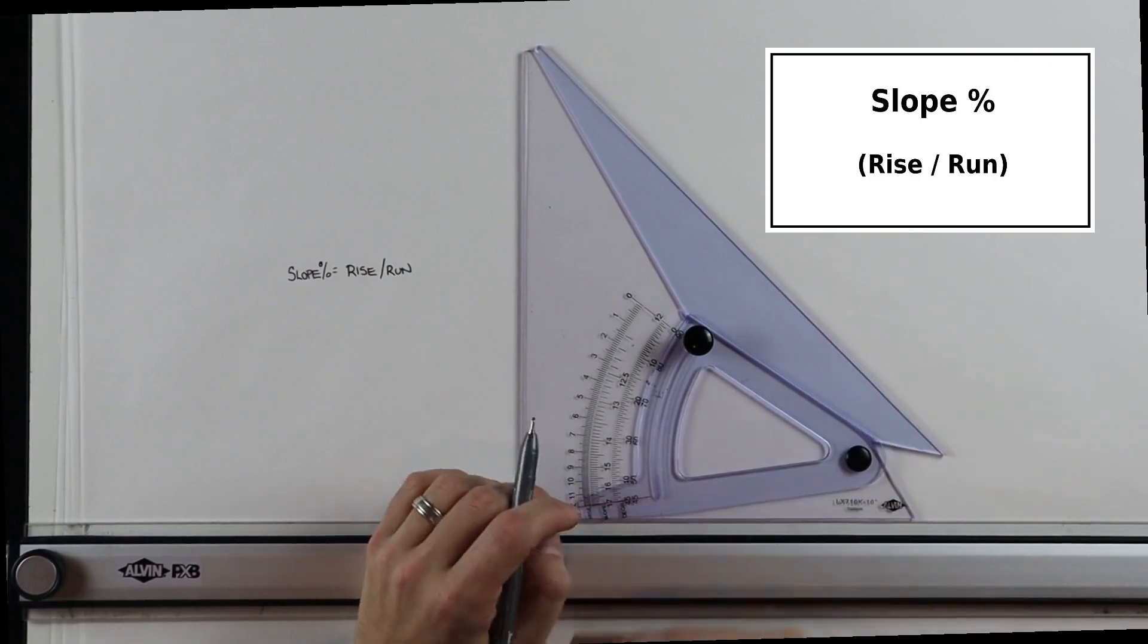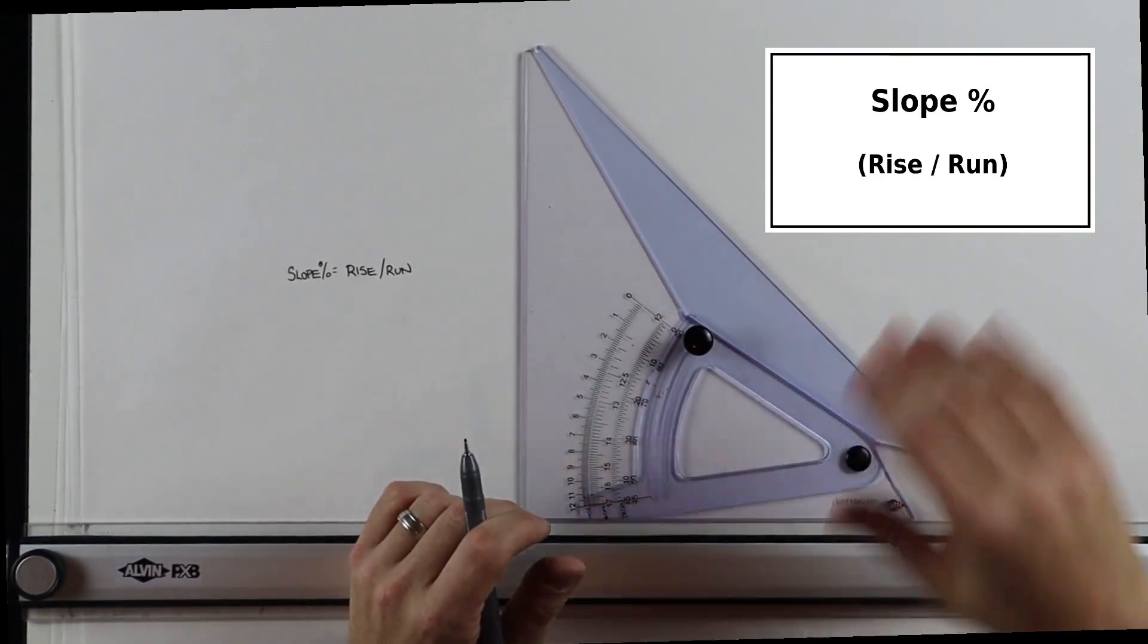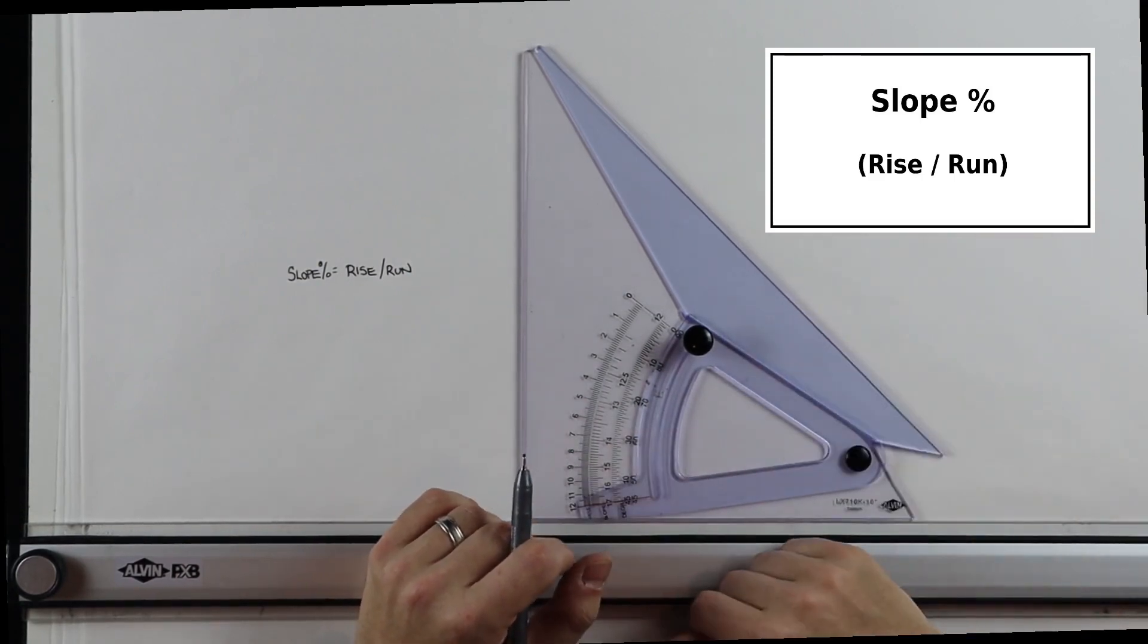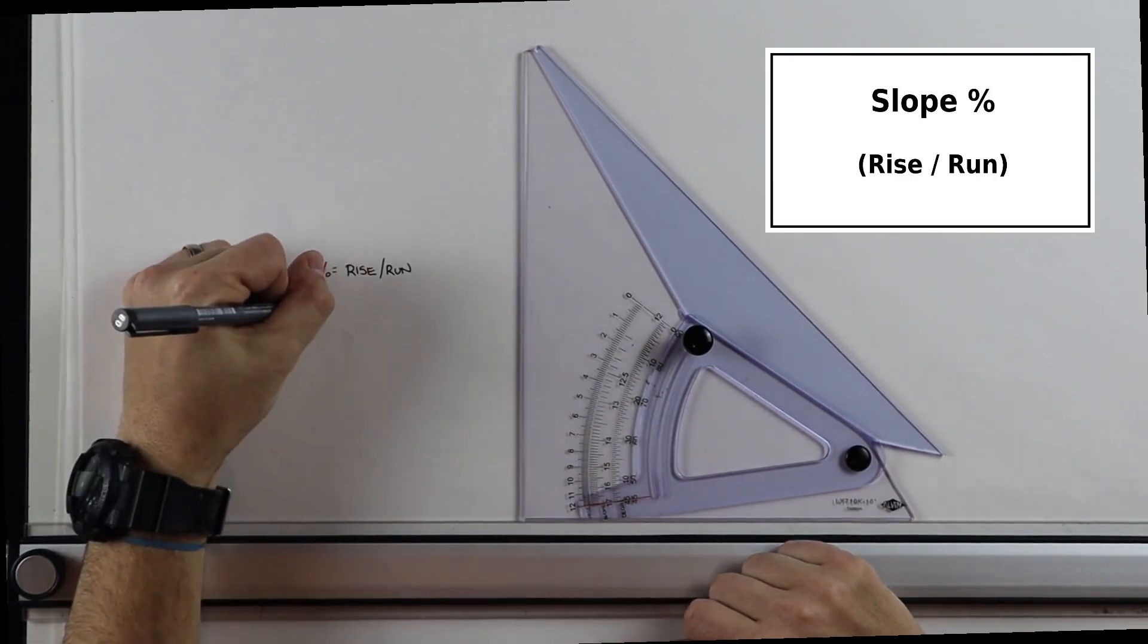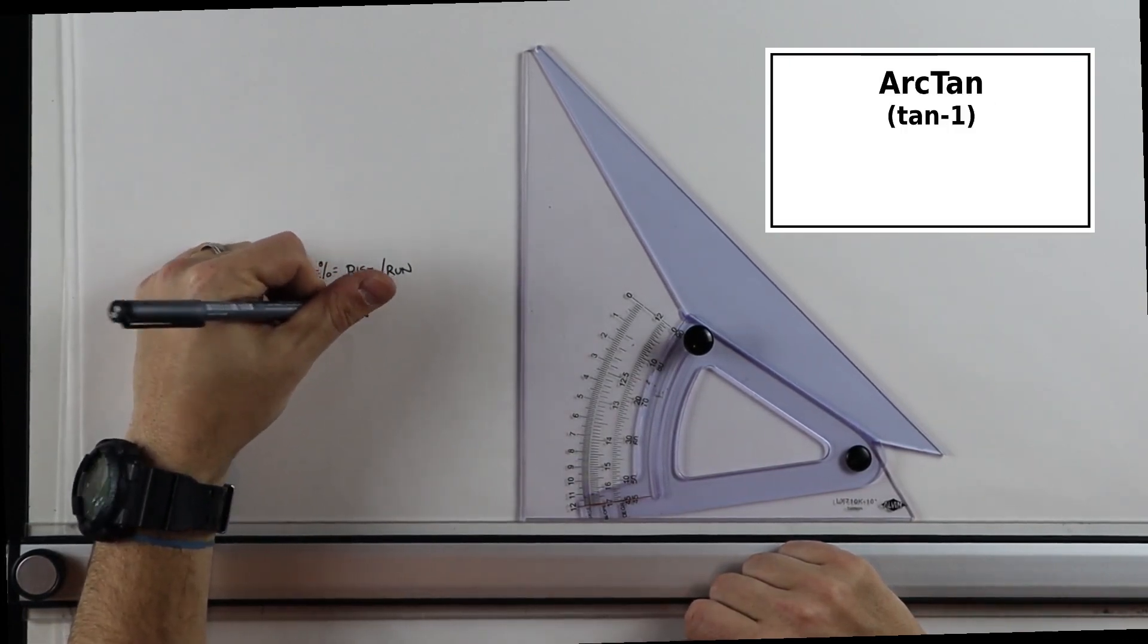And so when you're drawing something of a section of your design, you have to calculate how steep is the landscape that I'm drawing. And then you want to make sure that you're representing that accurately in section. Adjustable triangle can do that very quickly for you, essentially using the arc tan function on a calculator.